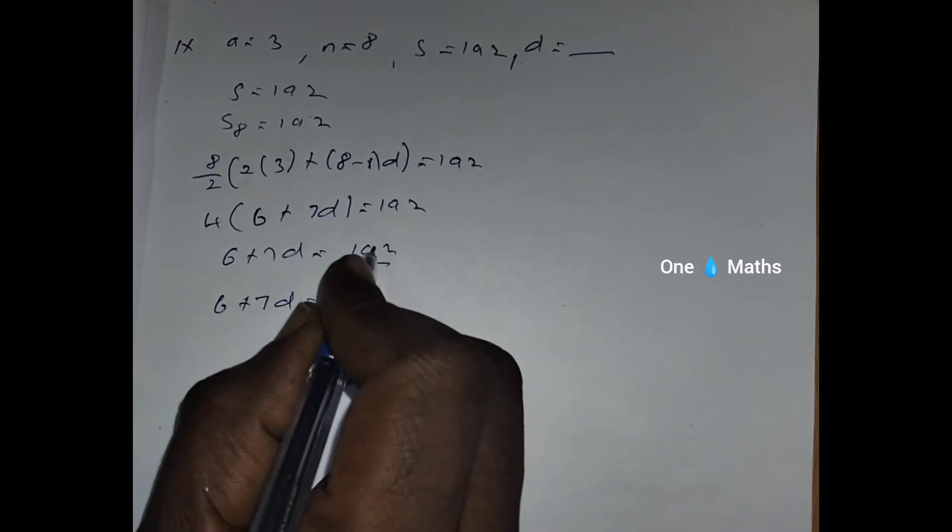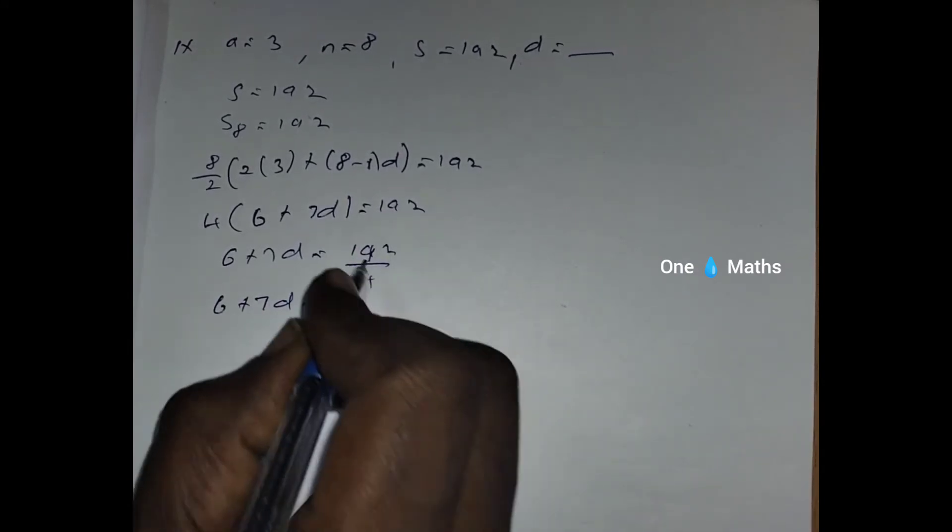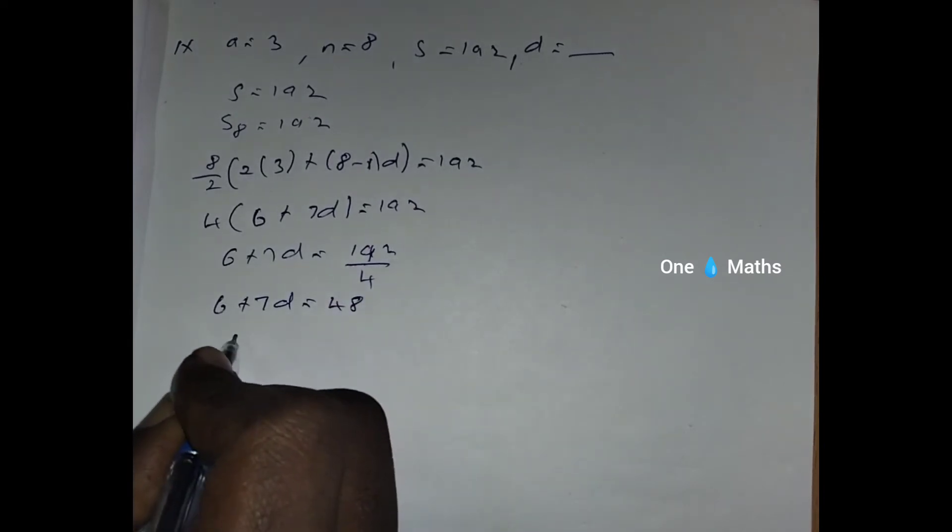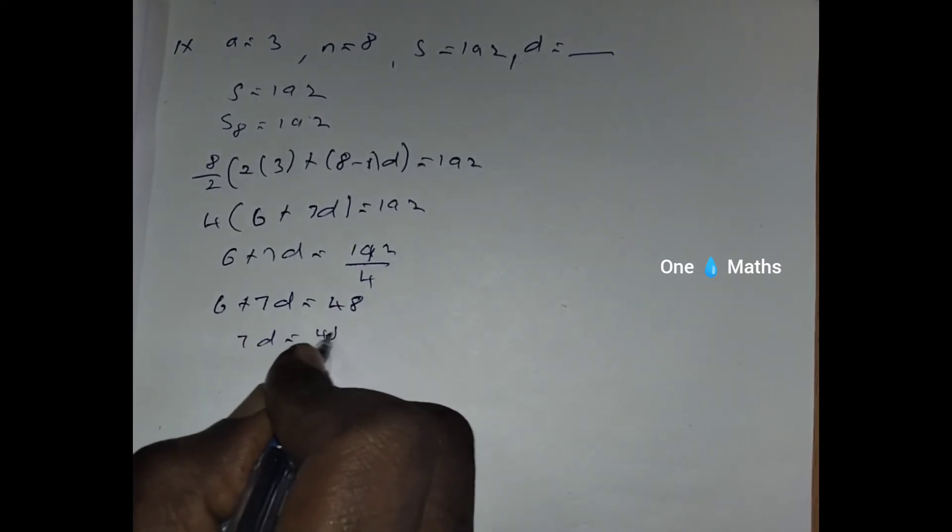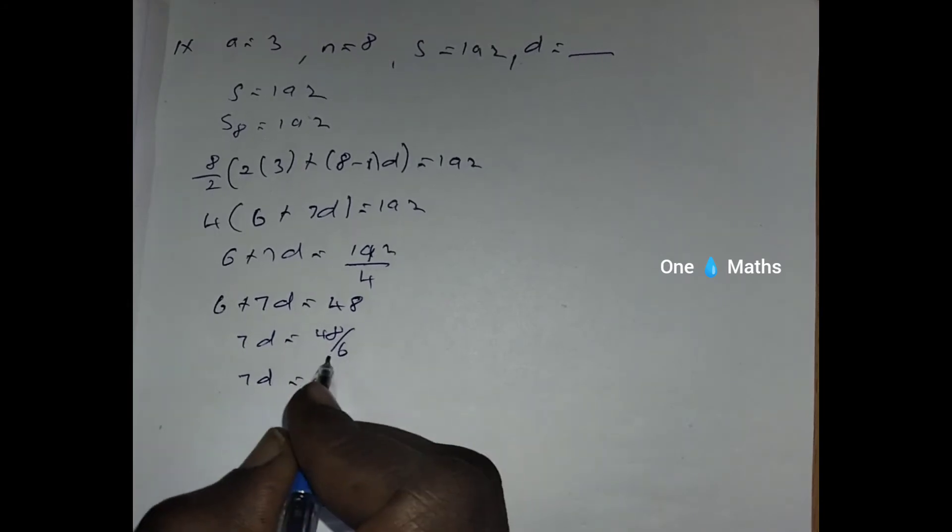6 plus 7D equals... 4 fours are 16, 32, 8 fours are 32. 7D equals 48, so 7D equals, 8 sixes are 48.